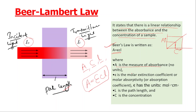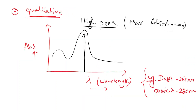This is the absorbance. Epsilon is the molar extinction coefficient. Its unit is mol⁻¹ cm⁻¹ (or L mol⁻¹ cm⁻¹). L is the path length and C is the concentration. This formula allows us to determine qualitative data, specifically absorbance versus wavelength.